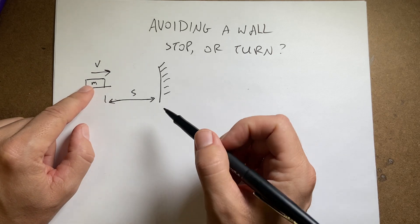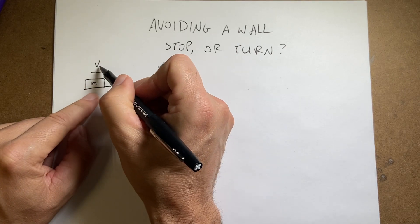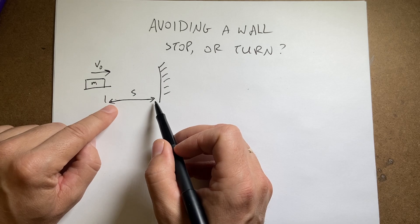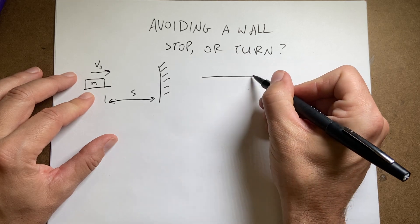Here I have a wall. I have a car. This is a top view moving at some velocity V0, I'll call that. And it's a distance S from the wall. I want to find out what this distance S has to be in order to stop. Okay, let's look at the car from the side real quick.